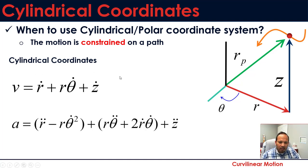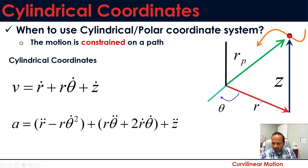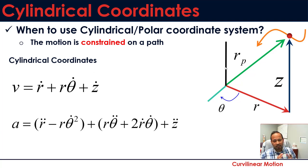The acceleration in cylindrical coordinates includes the same terms as the polar system, plus z_double_dot — the second derivative of z with respect to time. In cylindrical coordinates, the particle moves in 3D, so the z-axis is added to the planar r-theta system. Depending on whether your problem is planar or 3D, you choose between polar and cylindrical coordinate systems.